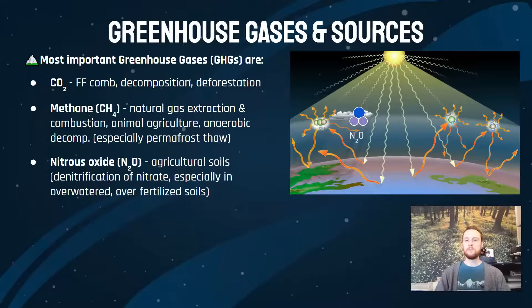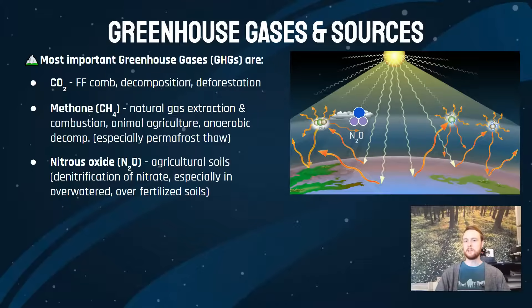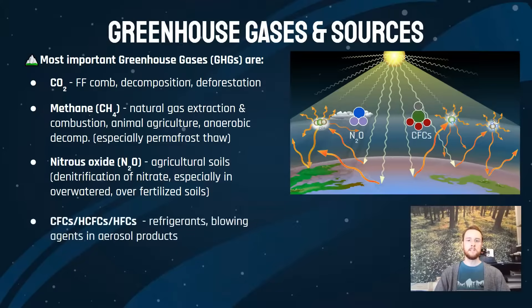Then we have nitrous oxide — N2O, not to be confused with NOx. About three quarters of all nitrous oxide emissions globally come from the management of agricultural soils, meaning adding nitrate fertilizers to soils and then the natural denitrification that happens in overfertilized and overwatered anaerobic soils, where nitrifying bacteria convert excess nitrates into N2 or in some cases nitrous oxide. CFCs from topics 9.1 and 9.2 are also greenhouse gases.